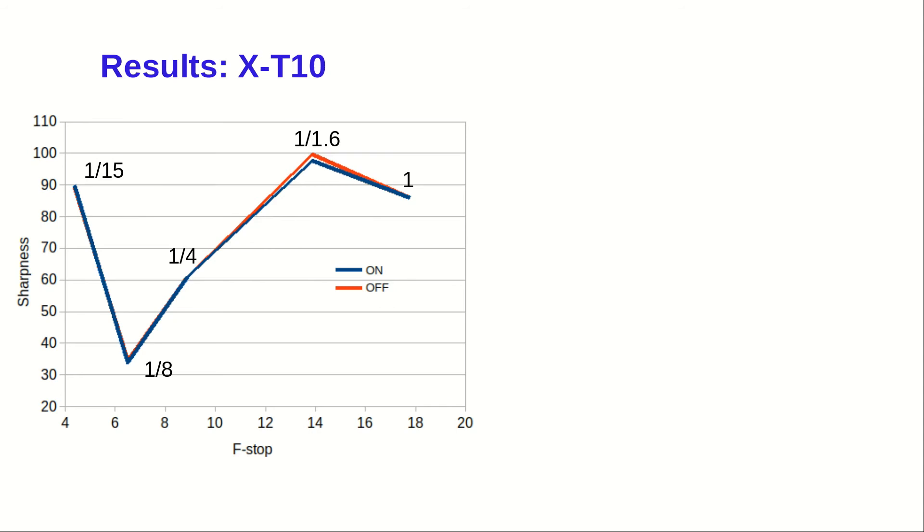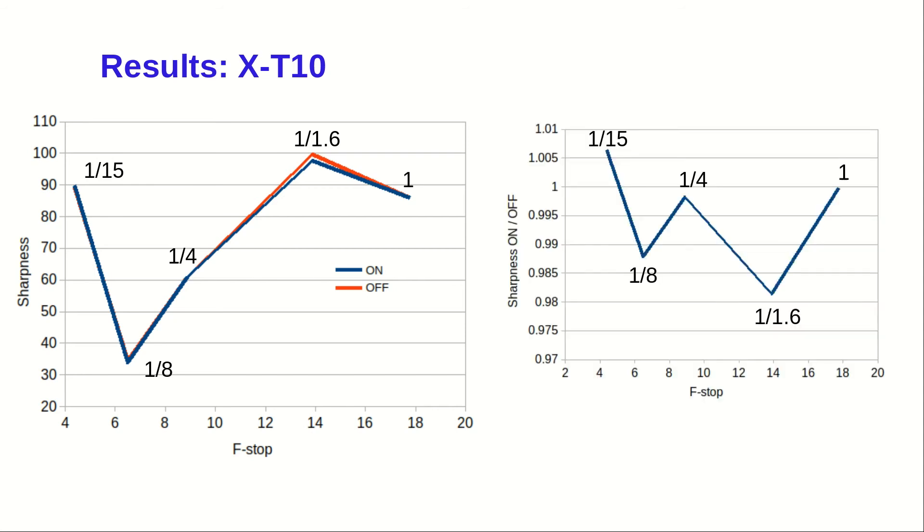Generally speaking, again, turning the IS off is a better idea, especially in the half a second to one second shutter speed region. However, the worst sharpness reduction you'll face is under 2%.